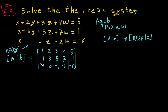We want to change this augmented matrix to RREF (Reduced Row Echelon Form). We can see we already have a leading 1 in the first row, so we need to make the other entries in that column equal to 0. In our course you can solve a linear system using RREF, REF, Gauss-Jordan method, or Gauss elimination. Here I'm using the Gauss-Jordan method.